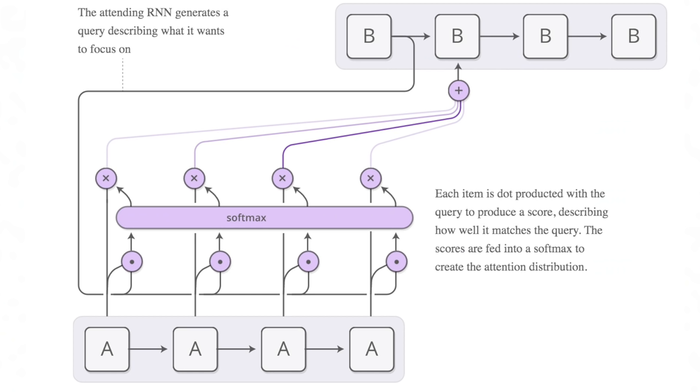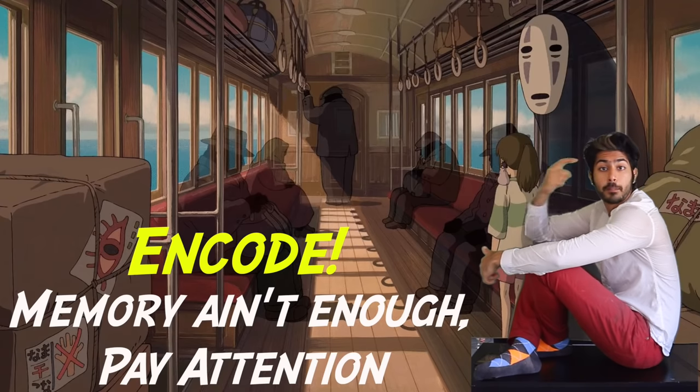Each encoder output gets a relevancy score, which we can convert to a probability score by applying a softmax activation to it. Then we extract a context vector, which is a weighted summation to the encoder outputs, depending on how relevant they are. Memory ain't enough. Pay attention.